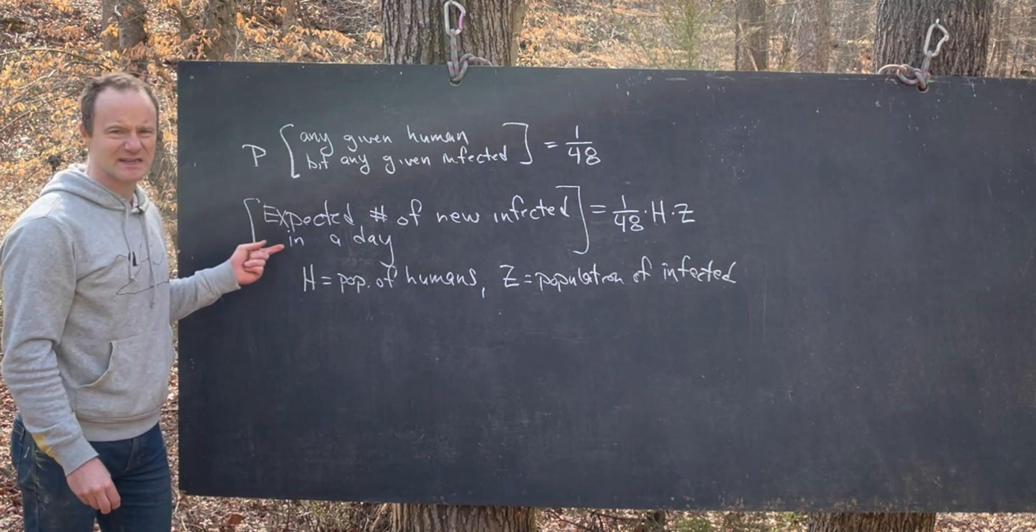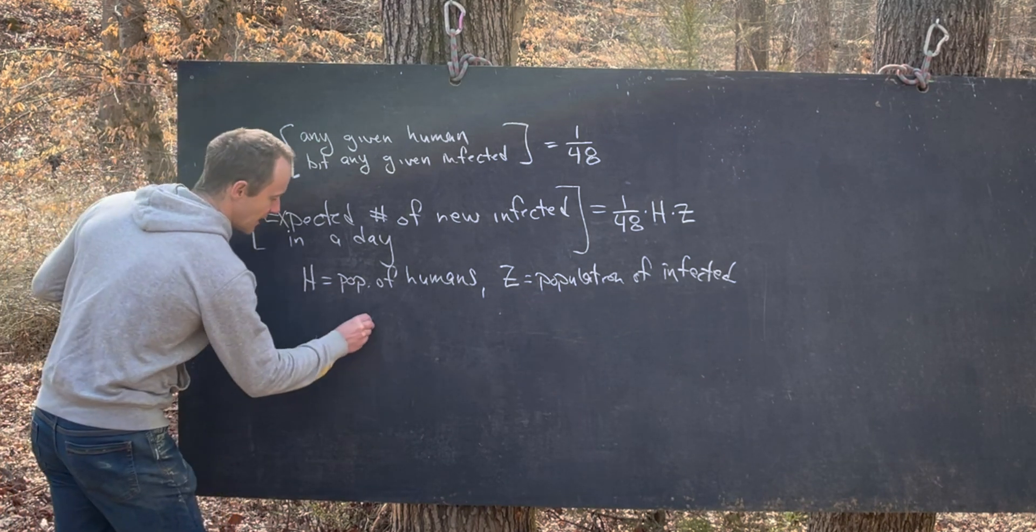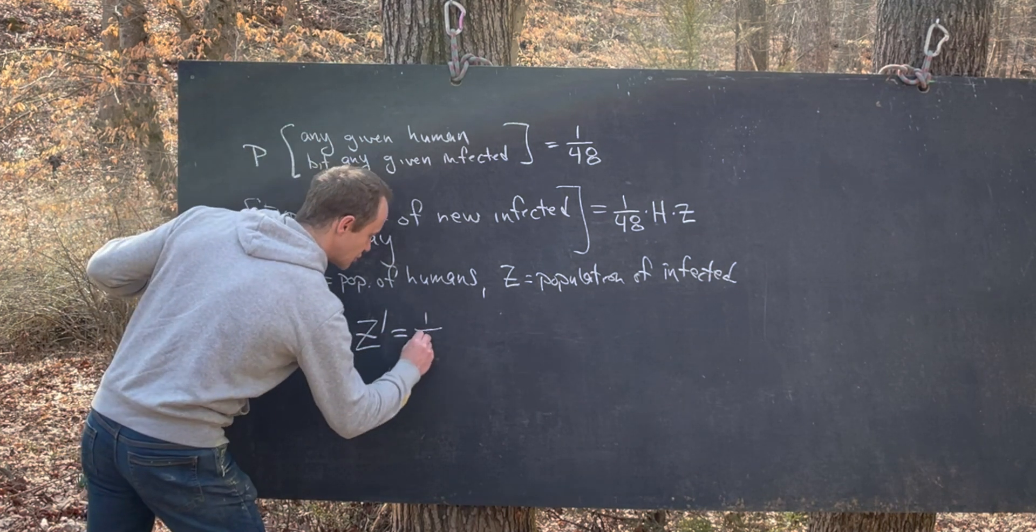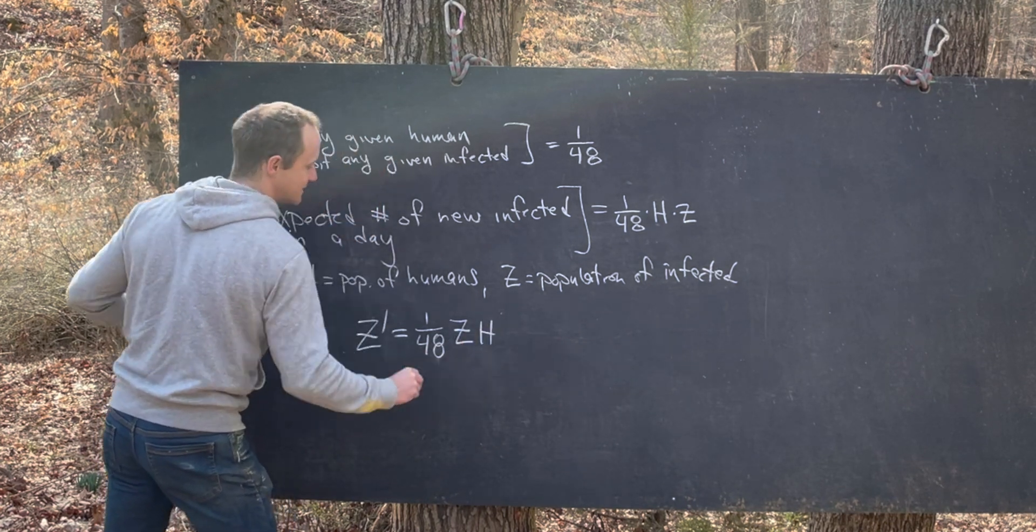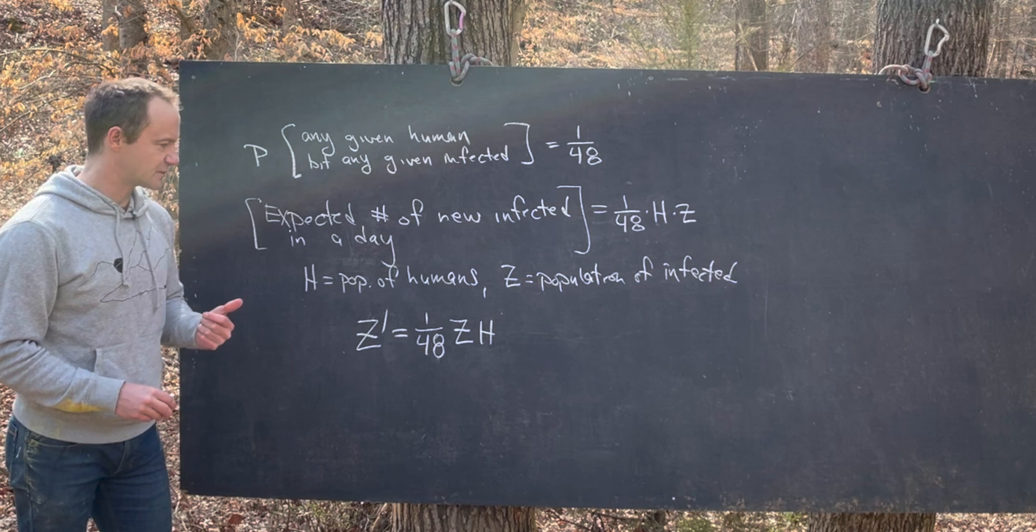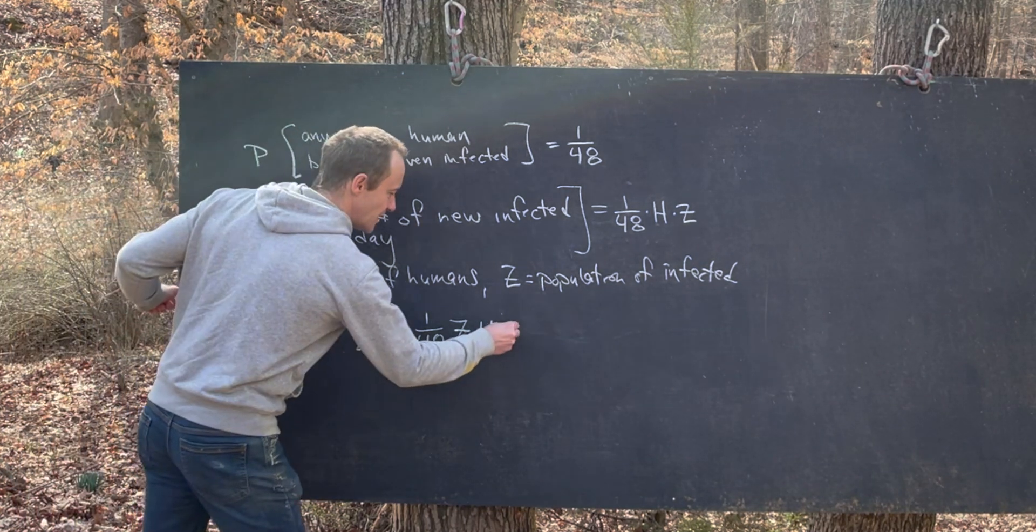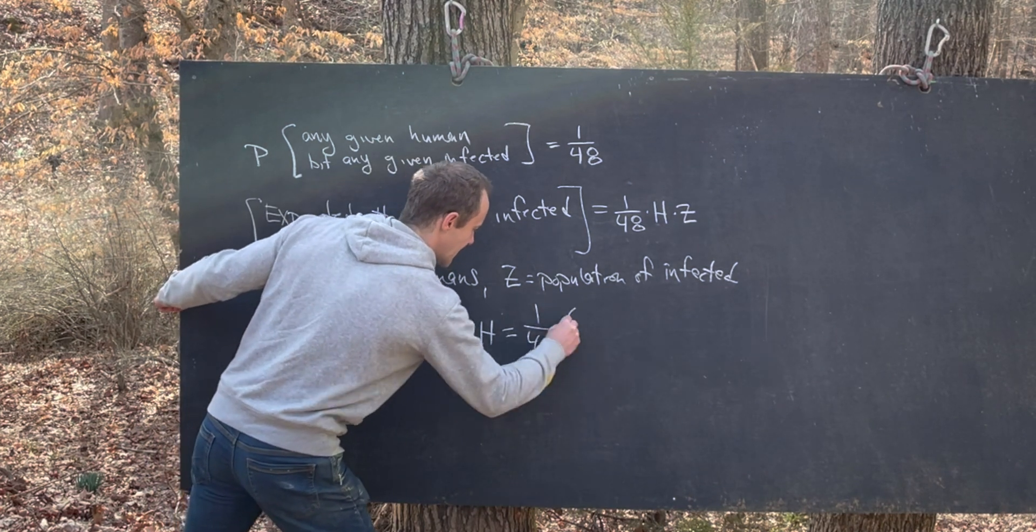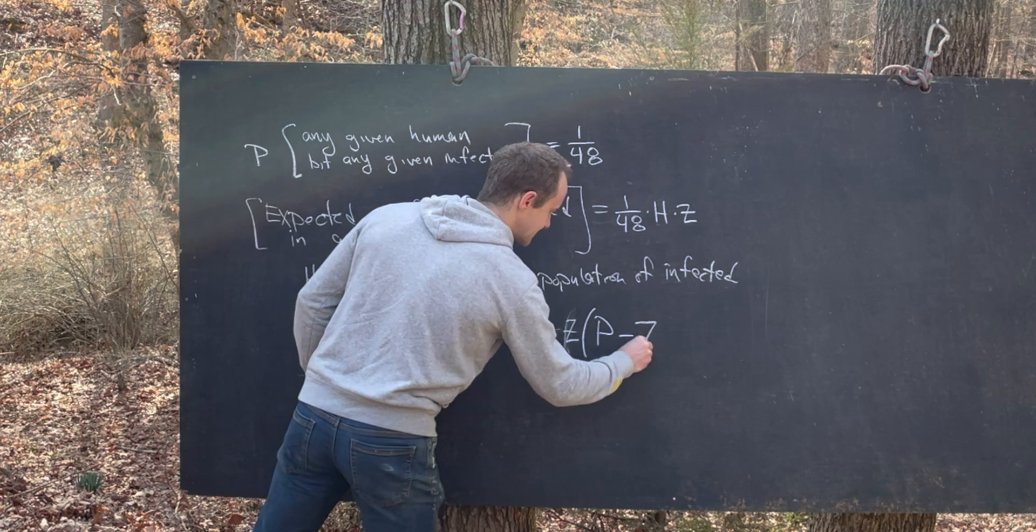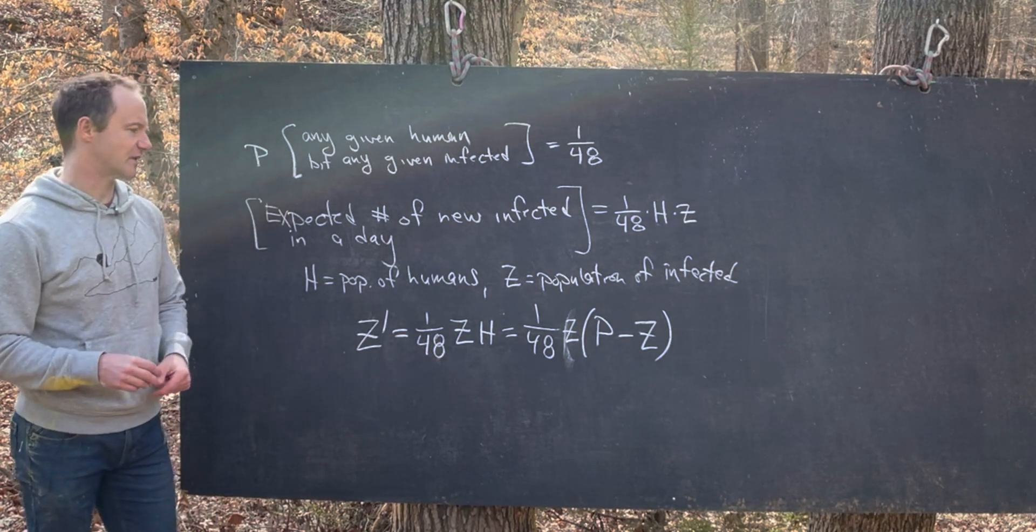But this expected number of new infected a day is like the change in Z. But the change in Z is like the derivative of Z. So that means we have the derivative of the population of the infected. In other words, Z prime is in fact equal to 1 over 48 times Z times H. But let's notice that the total population is never changing. And that's because once someone gets bit, they turn from a human to an infected. And so you're never losing population. So that means we could in fact write this as 1 over 48 times Z times the total population, which I'll call P, minus Z. Given that, like I said, the total population is never changing. So that means H plus Z is always that total population, which I'll call P.